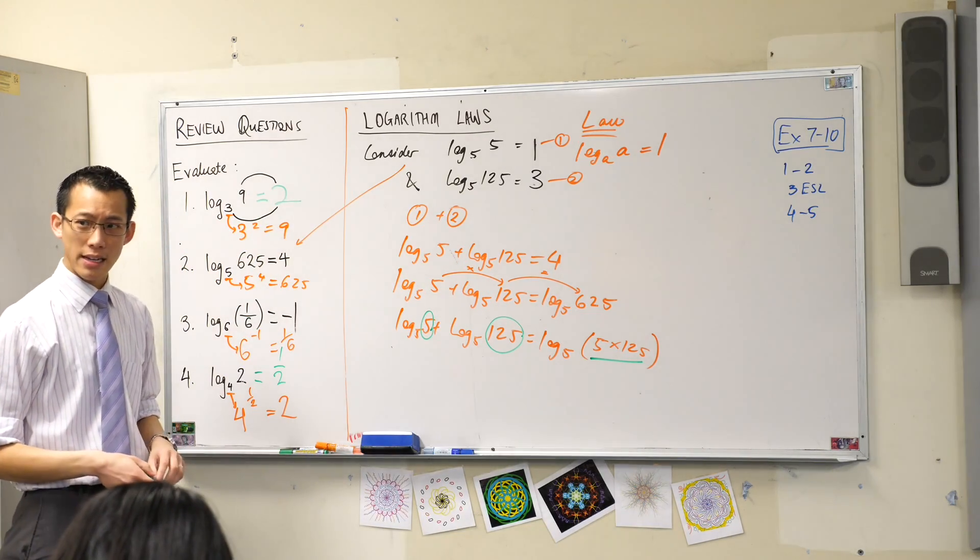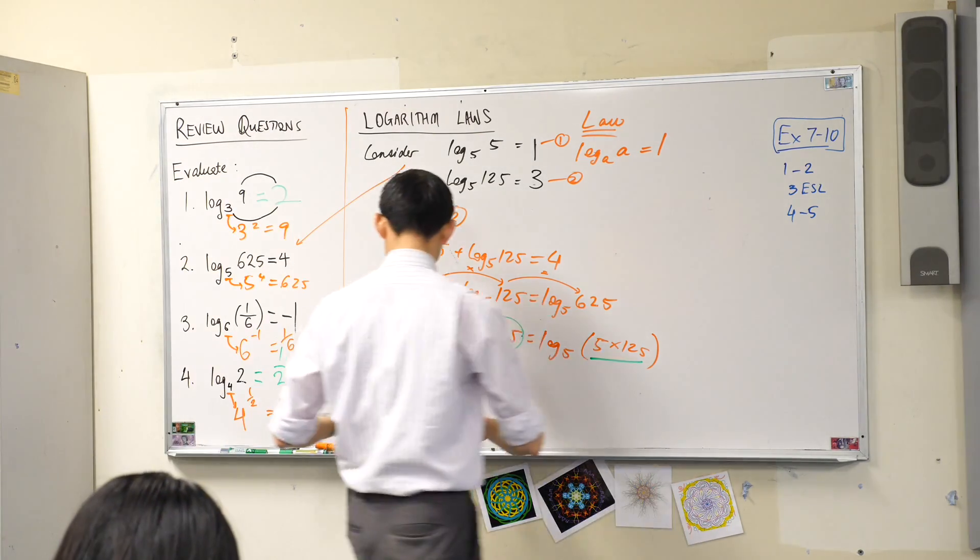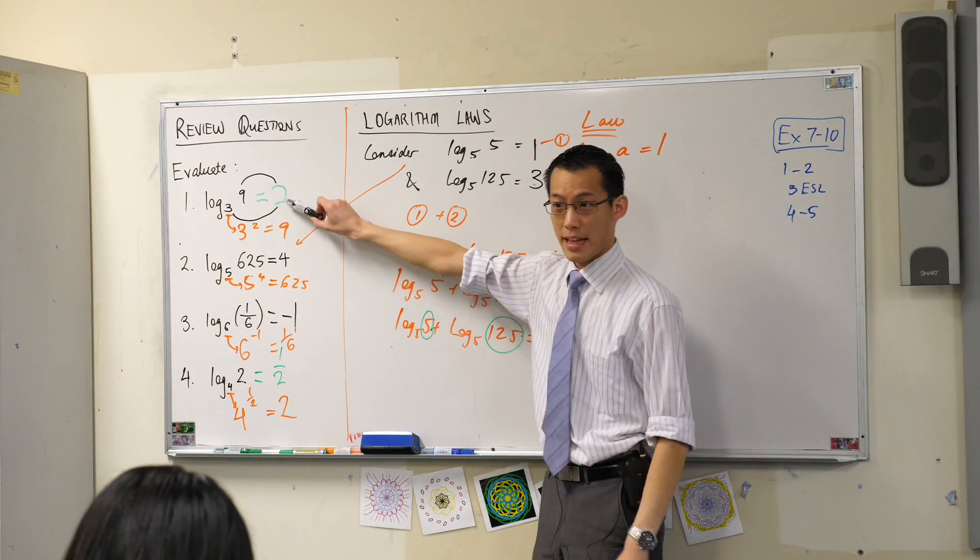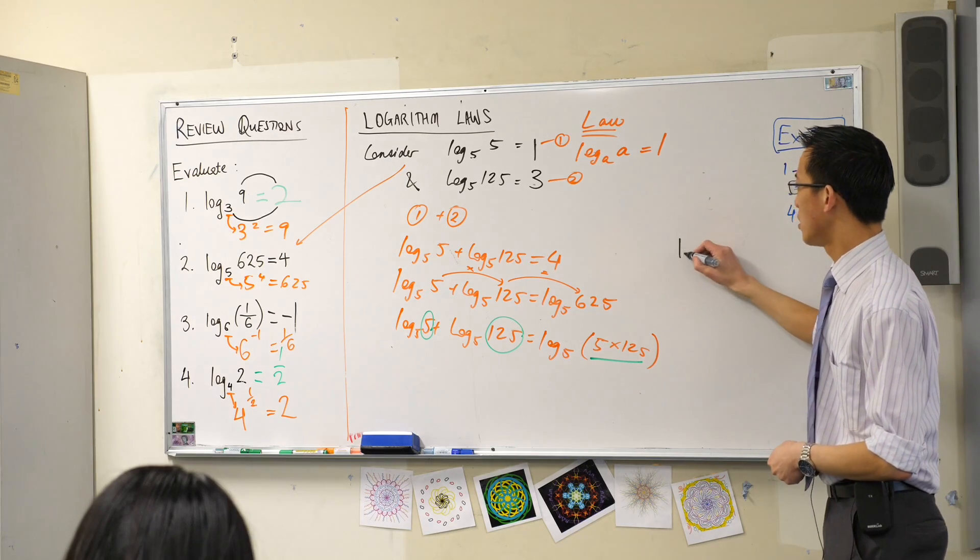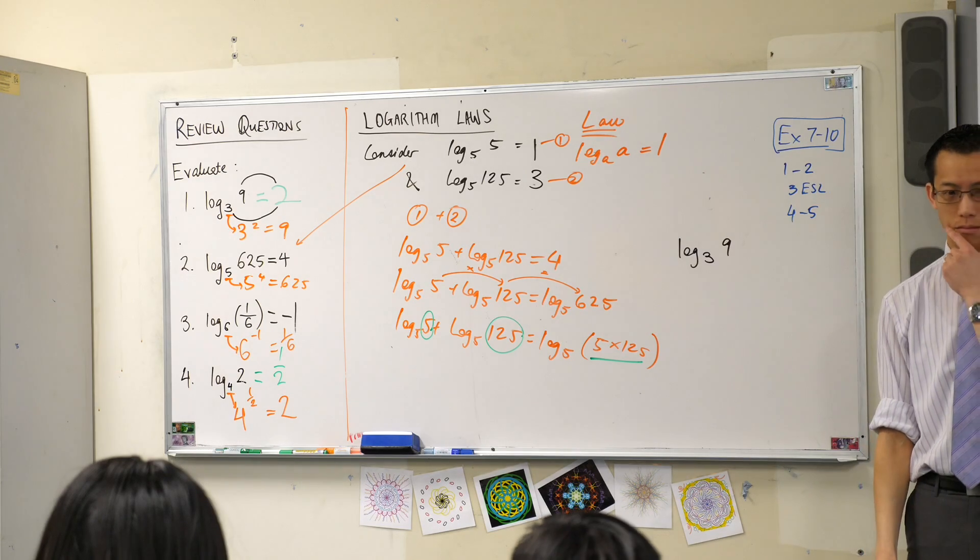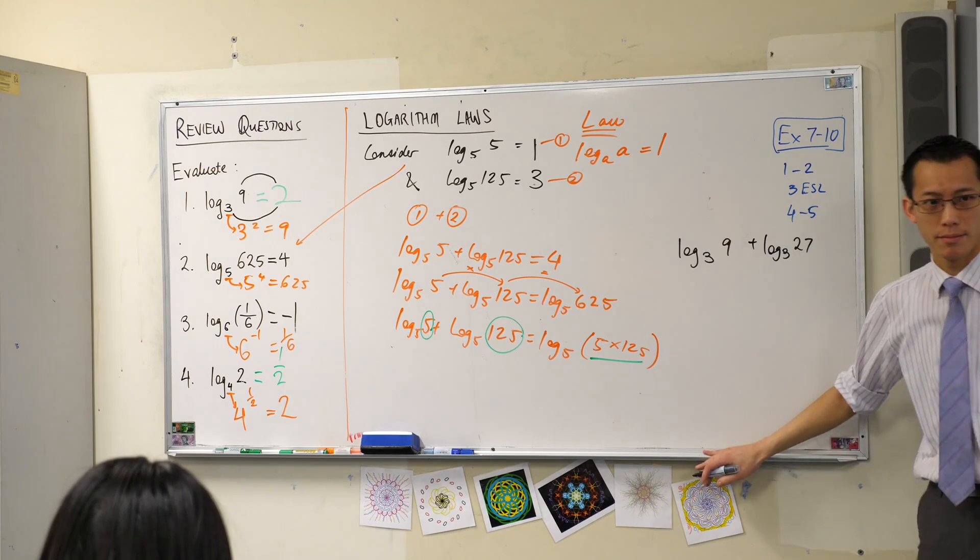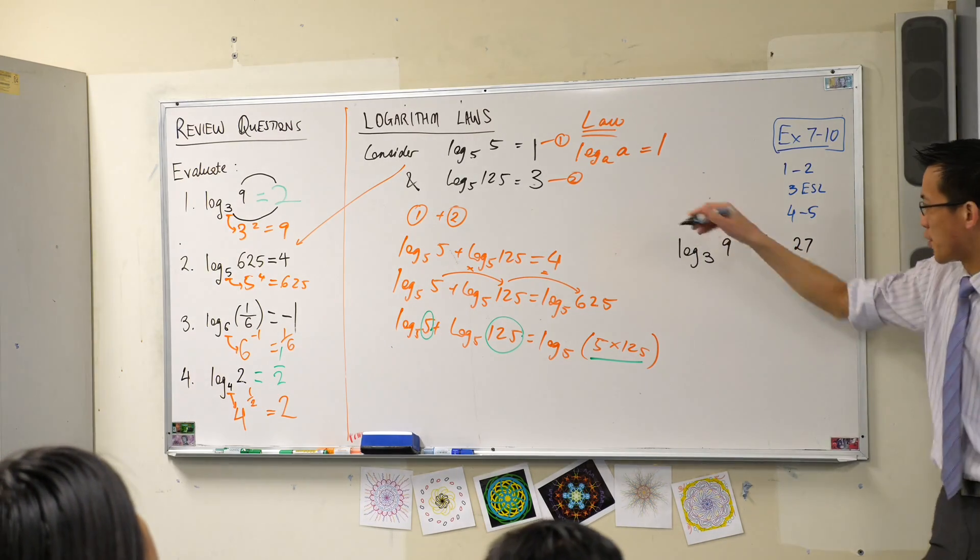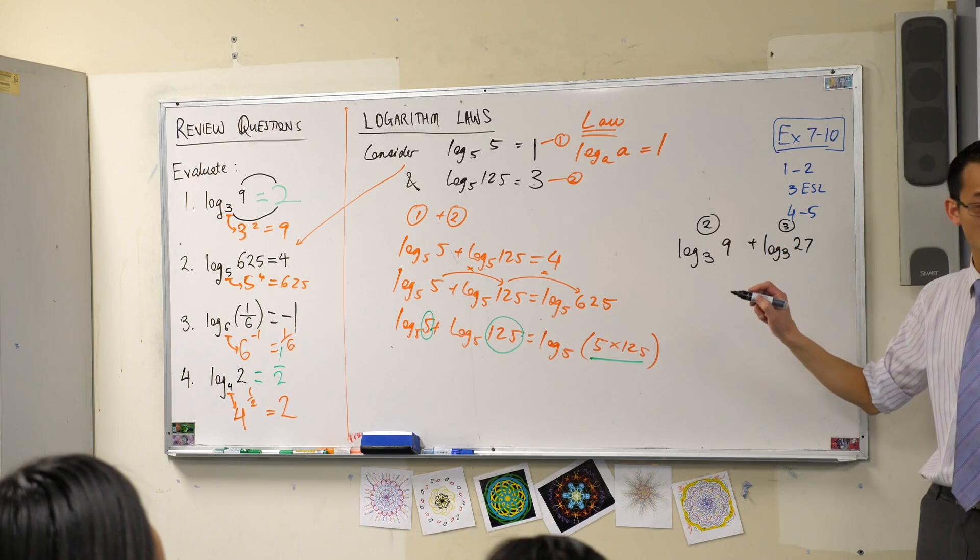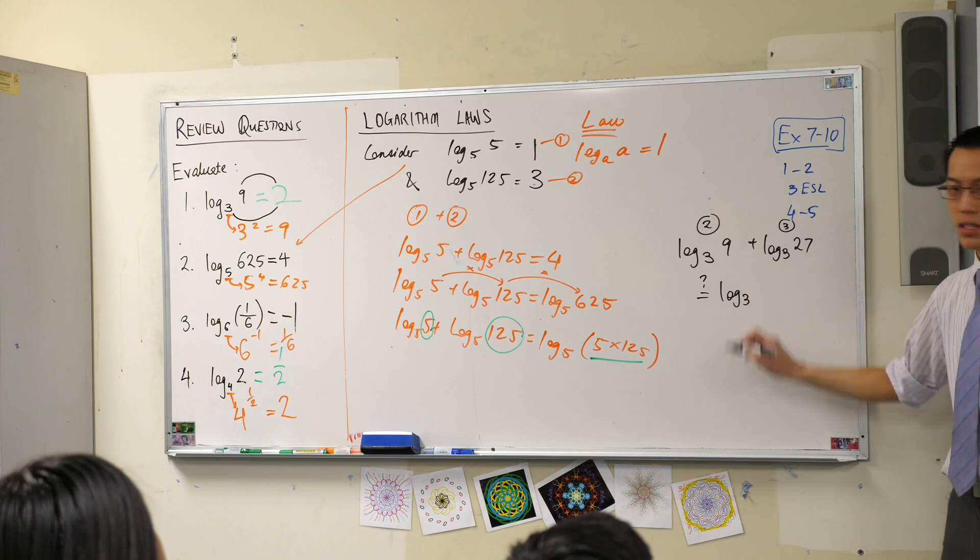Is this true for any numbers that we like? Let's think about this one up the top. Where'd my black go? Let's think about that one. Log base 3 of 9. If I add that to log base 3 of, say, 27. You already know what this one is. You wrote down that value, it's 2. What's this one? It's 3. It's just the next power up. Is that equal to, put your question mark here. Is that equal to, what's 9 times 27? That's a big number. 243.